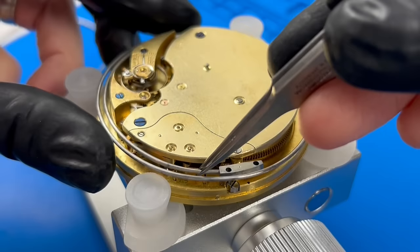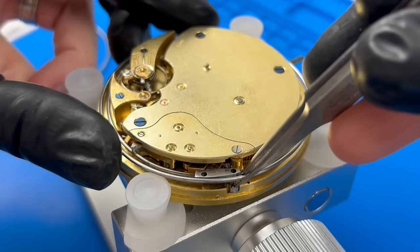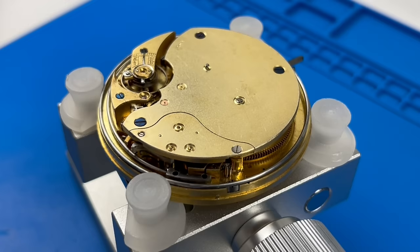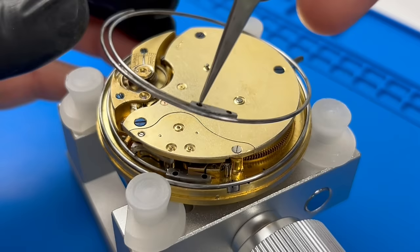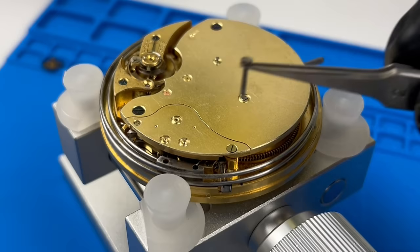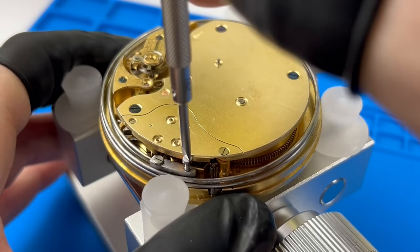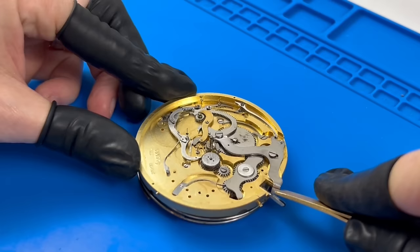Satisfied with the operation of the repeater, I can then proceed with installing the gongs. The lower pitched gong is installed first, directly in line with the hour hammer. The higher pitched gong is installed on top, and is used as part of the quarter strikes. Both gongs are fitted to the plate using two screws, one of which was made using the lathe earlier in this process.